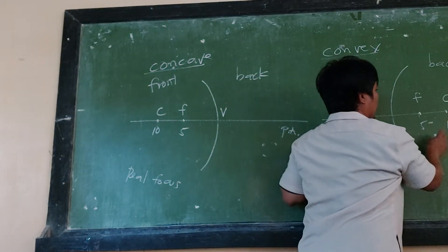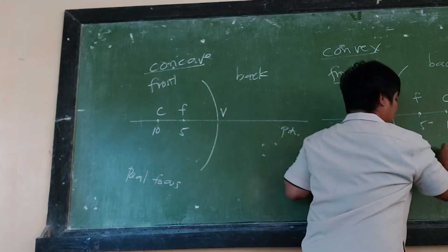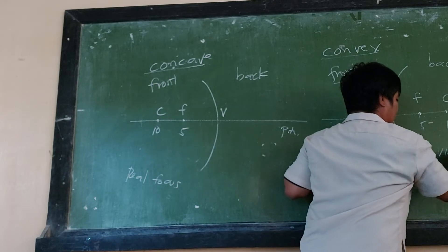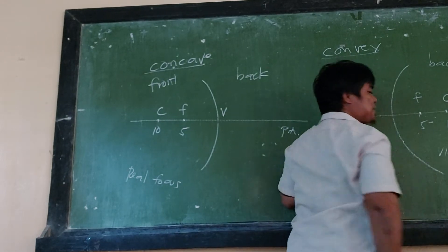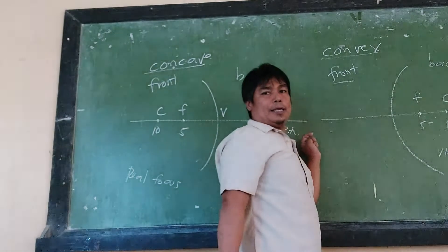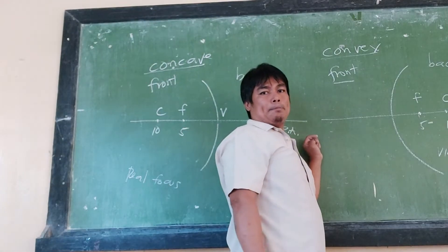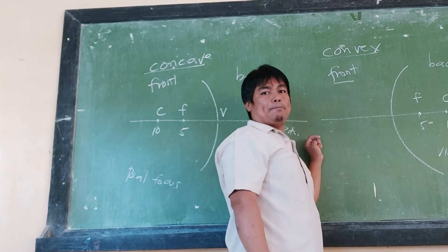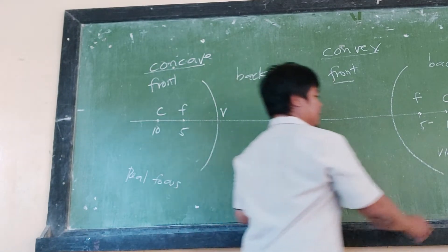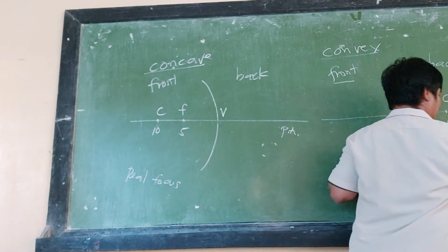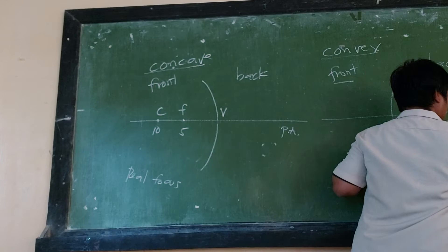For the convex mirror, since its focus falls behind the mirror — on the back side — its focus is what we call virtual, or imaginary only. So the convex mirror has a virtual focus.